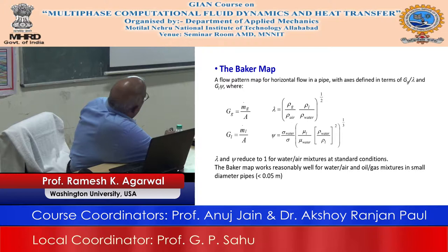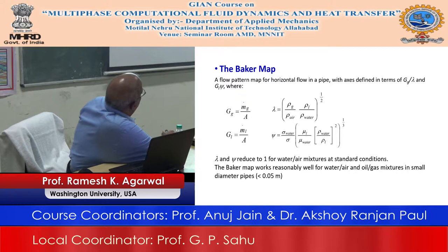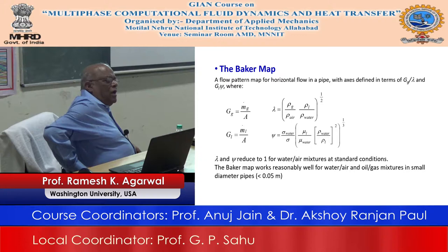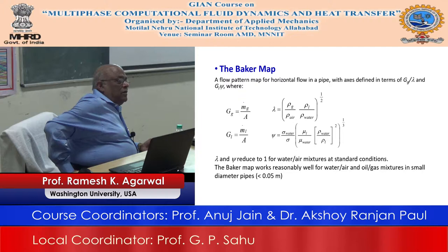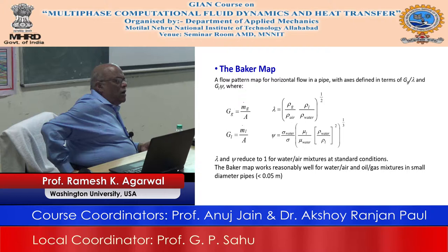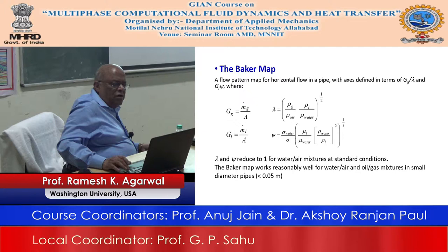From the Baker map you can identify annular flow, slug flow, plug flow, bubbly flow, stratified flow, and wavy flow. If you do an experiment and measure the flux values, you can predict the flow type. If you get a different kind of flow than predicted, you may have discovered something new. Most people who have done this experiment find the chart is reasonable but not perfect, so there is still a lot of work in generating these kinds of charts.